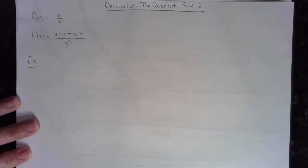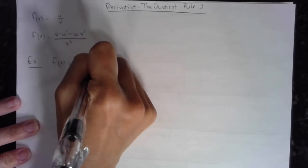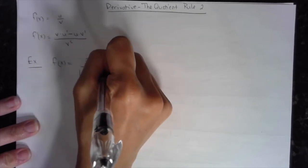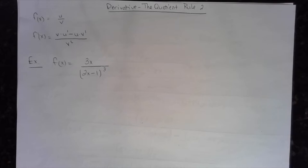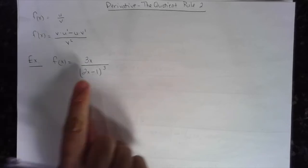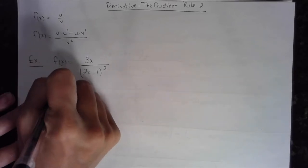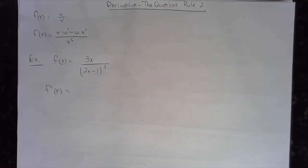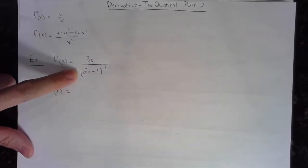Here's my example: let's call f of x the function 3x over (2x minus 1) to the third. It's a quotient, and I'll need to use the chain rule to derive that denominator. So I have a chain rule within the quotient rule. The first derivative is the bottom times the derivative of the top, minus the top times the derivative of the bottom, all over the bottom squared.